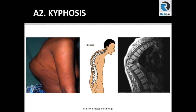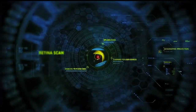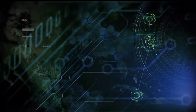Kyphosis is forward flexion of the spine. It is normally not seen in the lumbar spine. However, the thoracolumbar junction is a common site for kyphotic or gibbous deformity due to wedge compression fracture of one of the lower thoracic or upper lumbar vertebrae.